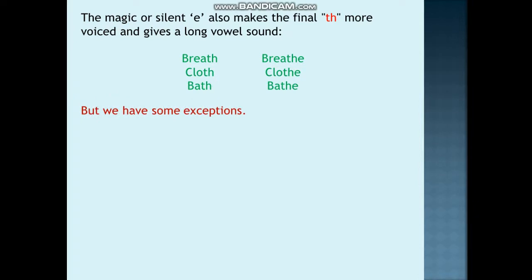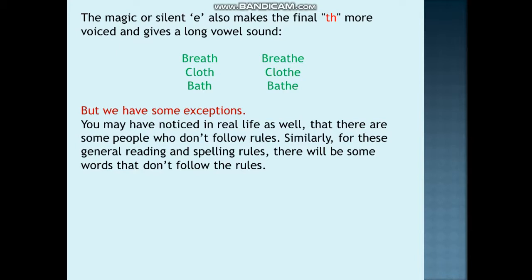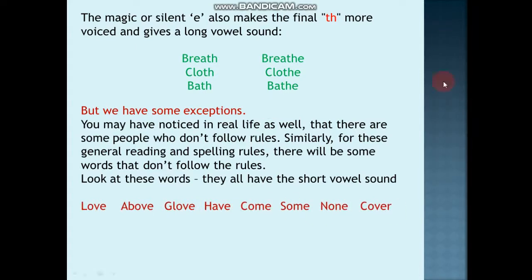Lekin yahan par aap dekhenge, jaise har cheez mein exceptions hote hain, we have some exceptions here as well. Jaise hi, you may have noticed in real life, that there are some people who don't follow rules. Dekhe aapne traffic signal mein, jab red signal lagta hai, to koi na koi to aisa hoga - bike wala ya car wala - jo signal todke nikal jata hai. To sab rule follow nahin karte hain. Waise hi, words mein bhi - there are some words that don't follow these general rules. To hum yahan par kuch words waise dekh rahe hain. Aapke hisaab se, yahan par ye - kyunki yahan par E hai - isko sound 'oh' hona chahiye tha, hai ki nahin? Lekin hum isko kaise pronounce karte - hum isko 'love' bolte hain, love nahin bolte. Isko hum 'above' bolte hain, aboove nahin kehte. Isko hum 'glove' kehte hain, gloave nahin kehte. To waise hi, ye jo words hain - love, above, glove, have, come, some, none, aur cover - ye sab short vowel sound use kar rahe hain, in spite of E. Thik hai. These are the exceptions. There are many exceptions like this.